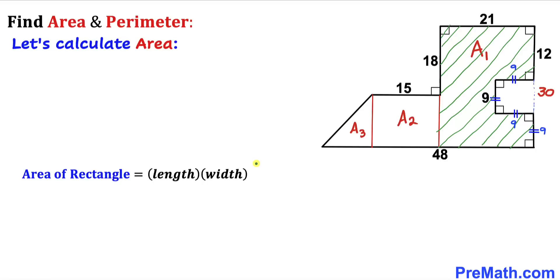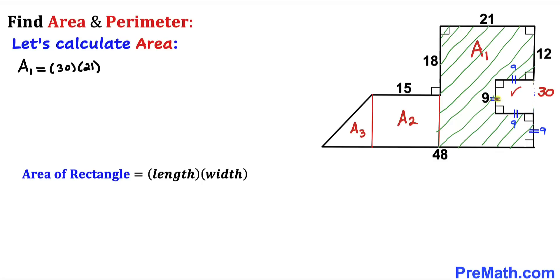Adding 12 plus 9 plus 9 gives us 30 units. Recalling the area of a rectangle formula — area equals length times width — our length is 30 and width is 21 units. So A₁ equals 30 times 21. Now focusing on the tiny square: the side length is 9, so 9 times 9 equals 81. We subtract 81 from A₁.